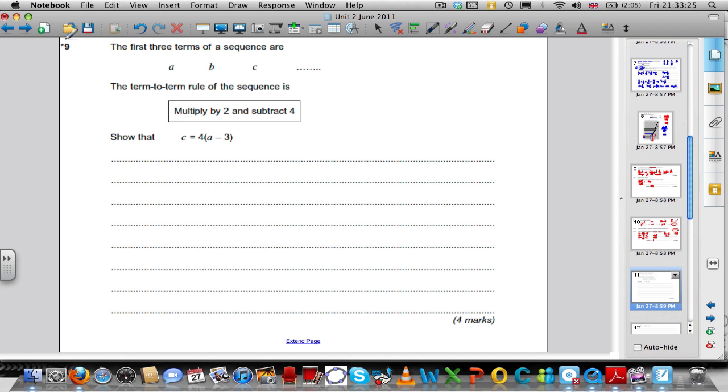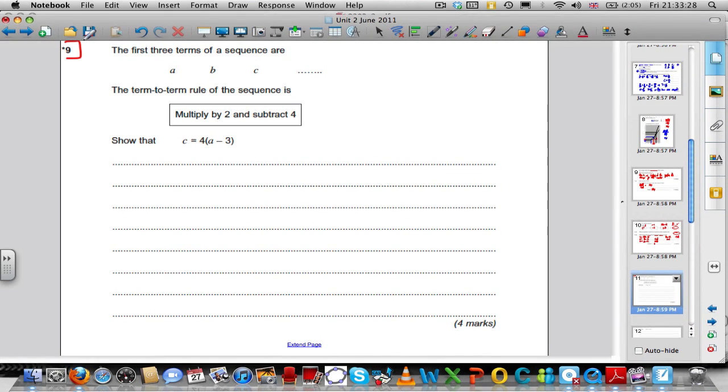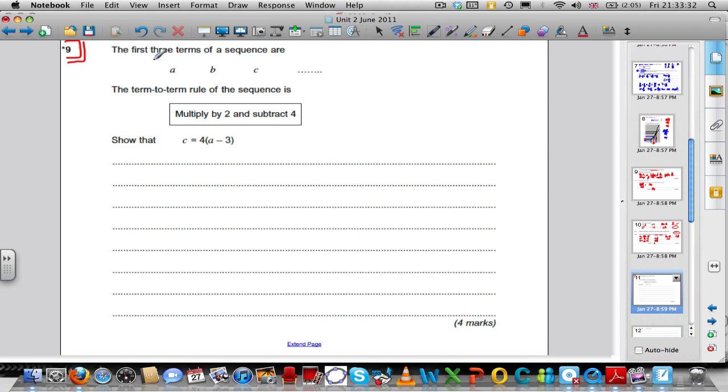Let's move on to question 9. This was probably the first slightly tricky question. It basically involved substitution. The first three terms of a sequence are ABC. So this is 1, this is 2, this is 3. The term-to-term rule. To get from the first term to the second term, you multiply by 2 and subtract 4. So B, the second term, is the first term, which is A, multiplied by 2 and then subtract 4. What's C? C must be the term before it, which is B, multiplied by 2 and subtract 4.